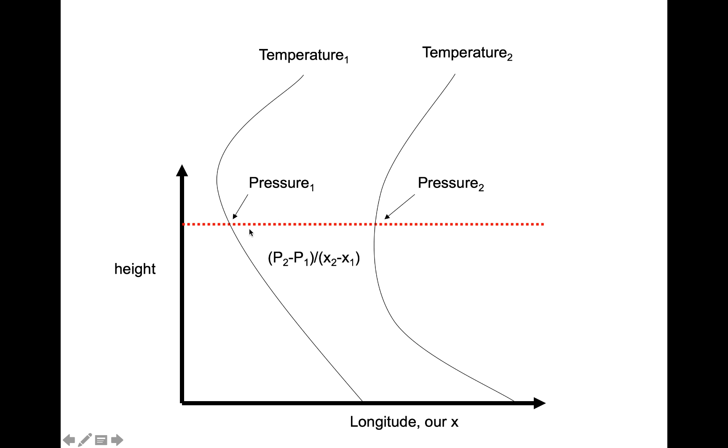Because the temperature is different, the pressure is going to be different in these two places. So here's pressure 1 at height z associated with temperature 1. Here's pressure 2 at height z associated with temperature 2.